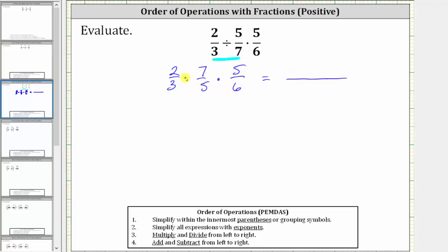where the numerator is 2 times 7 times 5, and the denominator is 3 times 5 times 6.